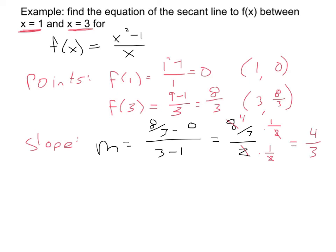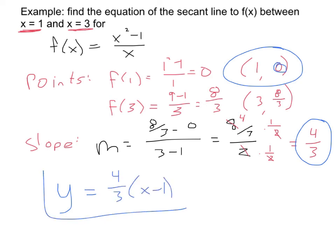Fantastic. Now I have a slope, and I can pick either point I want. I kind of like the top one because it looks simpler. So I'm going to get y, technically y minus 0, but I'm just going to leave it out. y equals 4 thirds times x minus 1. And that's it.